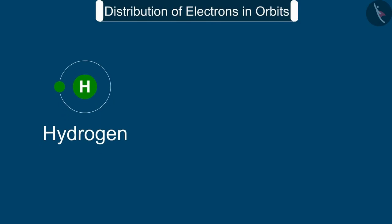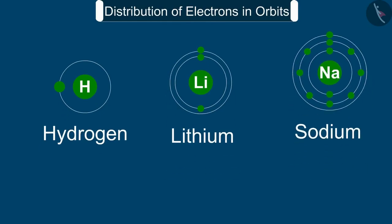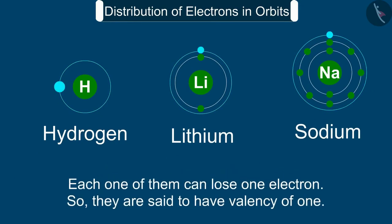Hydrogen, lithium, and sodium atoms contain one electron each in their outermost shell. Therefore, each one of them can lose one electron. So they are said to have a valency of one.